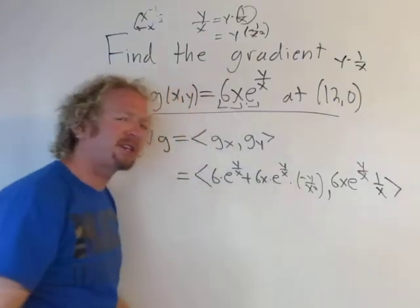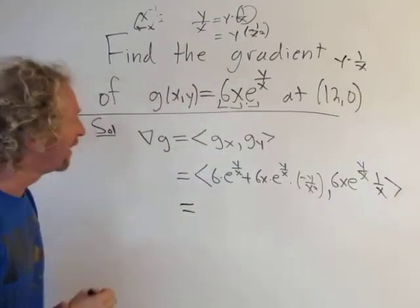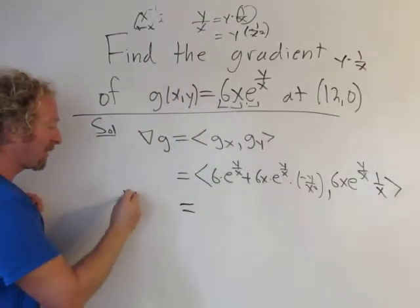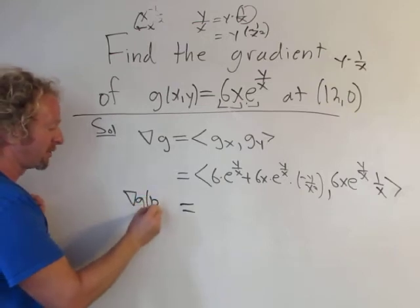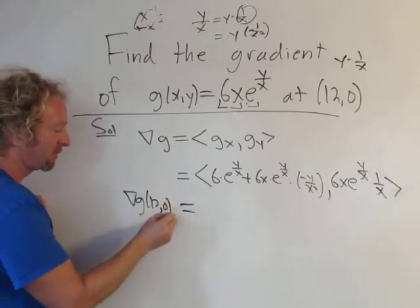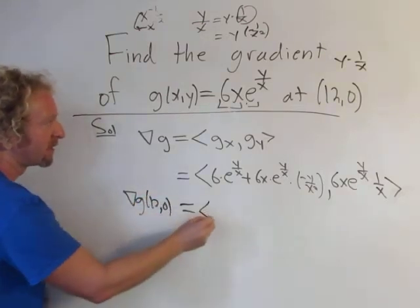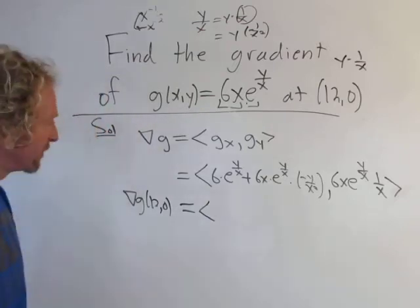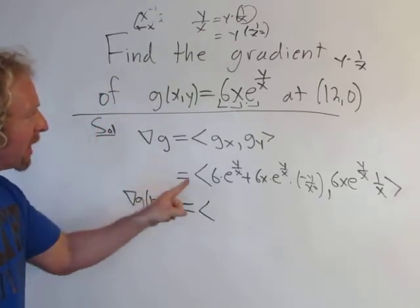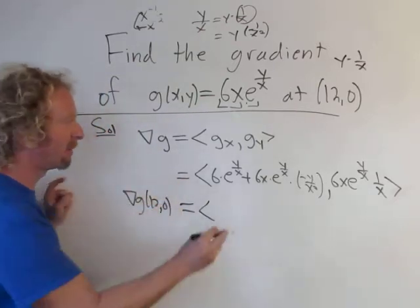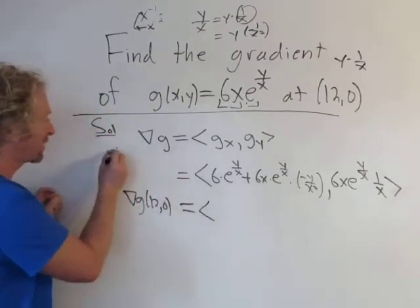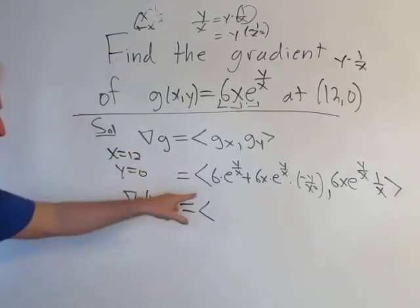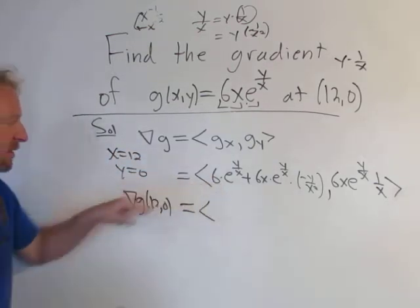That was a lot harder than expected. Now we plug in the numbers — point (12, 0). So x is 12 and y is 0. Let's see what we get. The first component is going to be six...